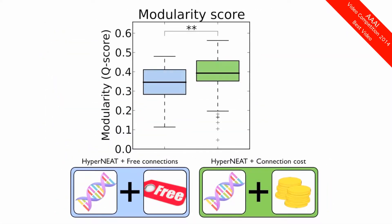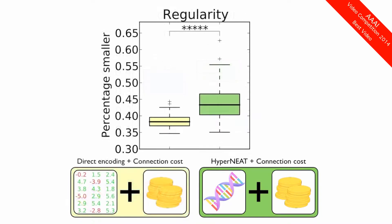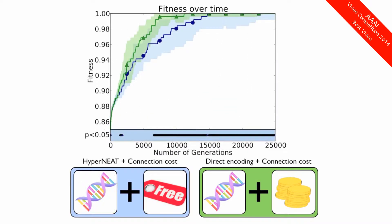In a direct comparison, HyperNEAT with connection cost is significantly more modular than HyperNEAT without connection cost. In another direct comparison, HyperNEAT with a connection cost is significantly more regular than a direct encoding with connection cost. Lastly, HyperNEAT with a connection cost performs significantly better than HyperNEAT without a connection cost on our modular problem.